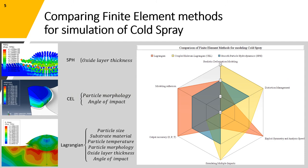The three shown finite element methods, including Lagrangian, coupled Eulerian-Lagrangian, and smooth particle hydrodynamics are the main methods that can be used to simulate a particle impact during the cold spray. However, due to their unique capabilities and shortcomings that can be seen in the diagram on the right, each of them is more suitable for studying the effect of a different set of process parameters.